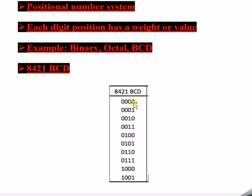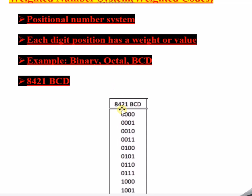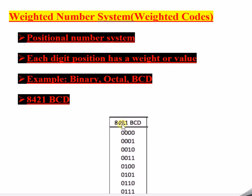Each digit has a weighted value — it is having some weight. For 0000, all weights contribute zero, but each position still holds a weight. In summary: a weighted number system, or weighted code, is a type of number system which is position-based, meaning each digit position has a weight or a value. That is the simple way to understand it.